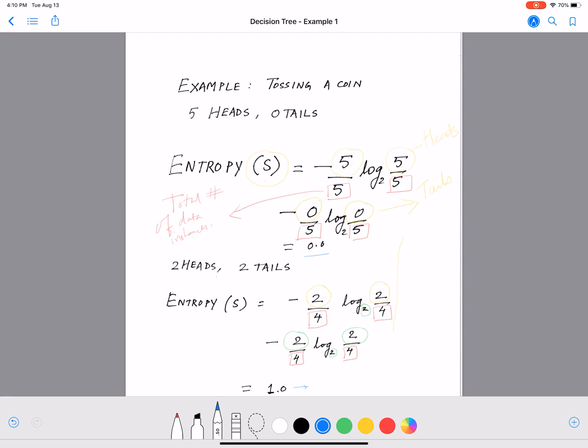In another scenario you have two heads and two tails, which is the maximum amount of impurity that's possible when you toss a coin four times. So entropy is a measure of impurity. That's why, if your sample is more impure, then the entropy value is higher.